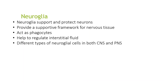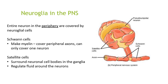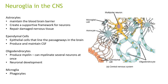Neuroglial cells support and protect neurons, provide a supportive framework for nervous tissue, act as phagocytes, and help regulate interstitial fluid. Different types are present within the CNS and PNS. Schwann cells make myelin and cover peripheral axons and can only cover one neuron. Satellite cells surround neuronal cell bodies and regulate fluid around the neurons. Astrocytes maintain the blood–brain barrier, create a supportive framework, and repair damaged nervous tissue. Ependymal cells line the passages within the brain and produce and maintain cerebrospinal fluid (CSF). Oligodendrocytes produce myelin that can myelinate several neurons at once and are involved in neuronal development, while microglia are phagocytes.